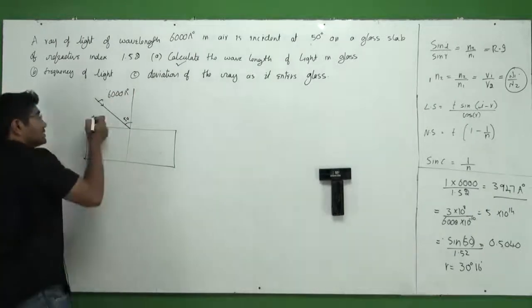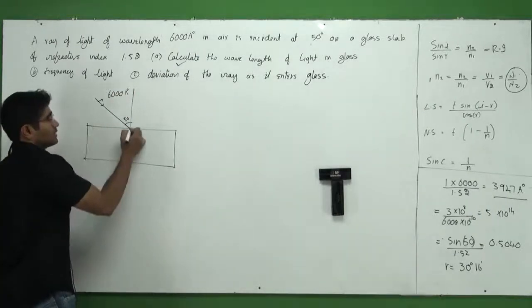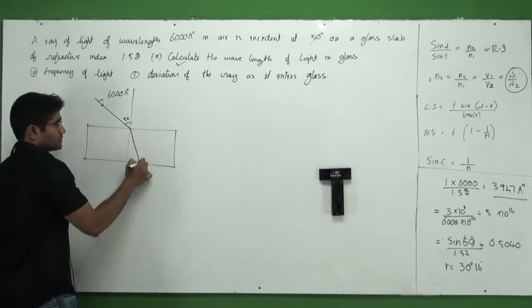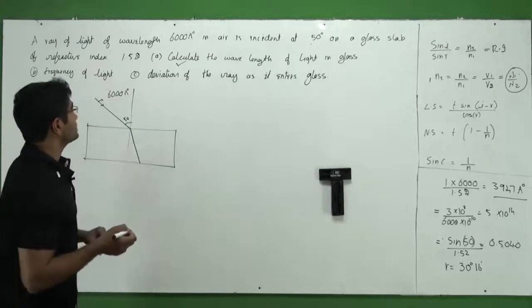All right, what next? We know that as it is coming from air to the glass, it has to bend towards the normal because this is a denser medium. Fine. That's the diagram.